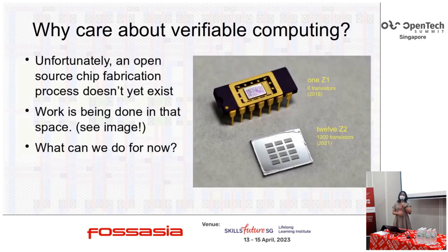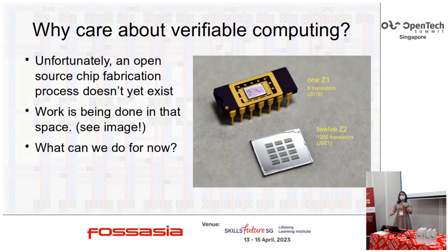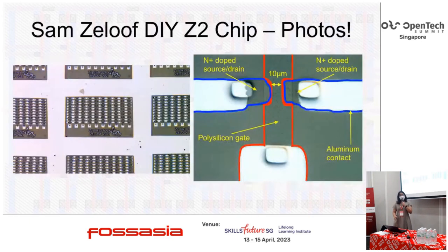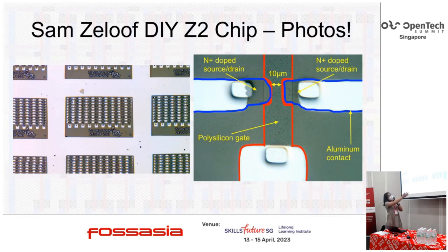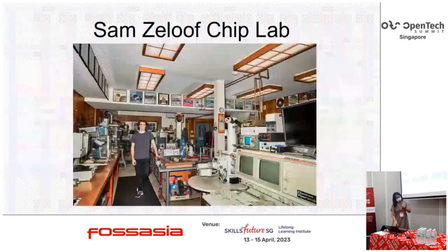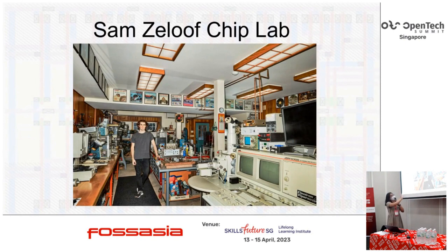Unfortunately, there are not many open-source chip fabrication processes as yet, although work has been done in this space. A very famous example is the D2 chip, which has, I believe, around a thousand transistors on chip. And this is all done at home — this is his lab, all at home. I think this is an older picture.